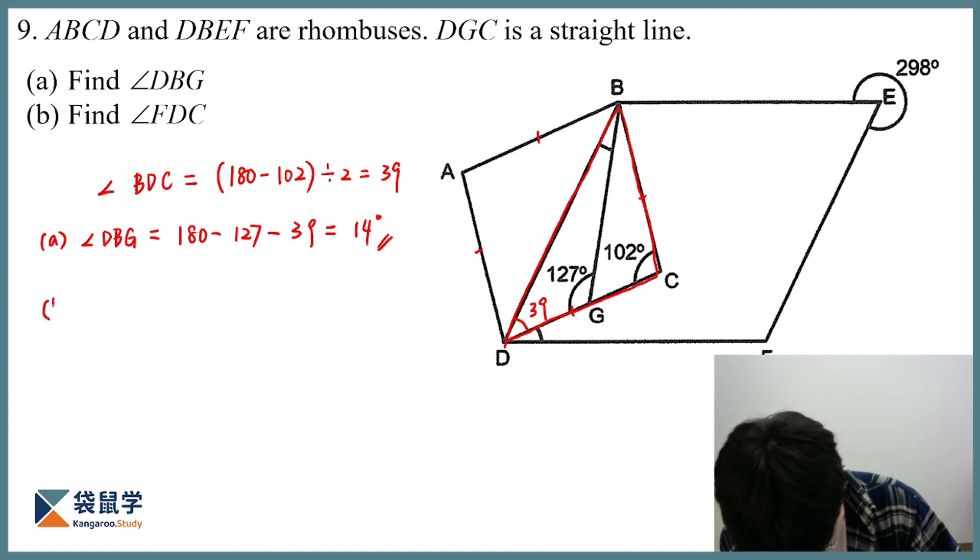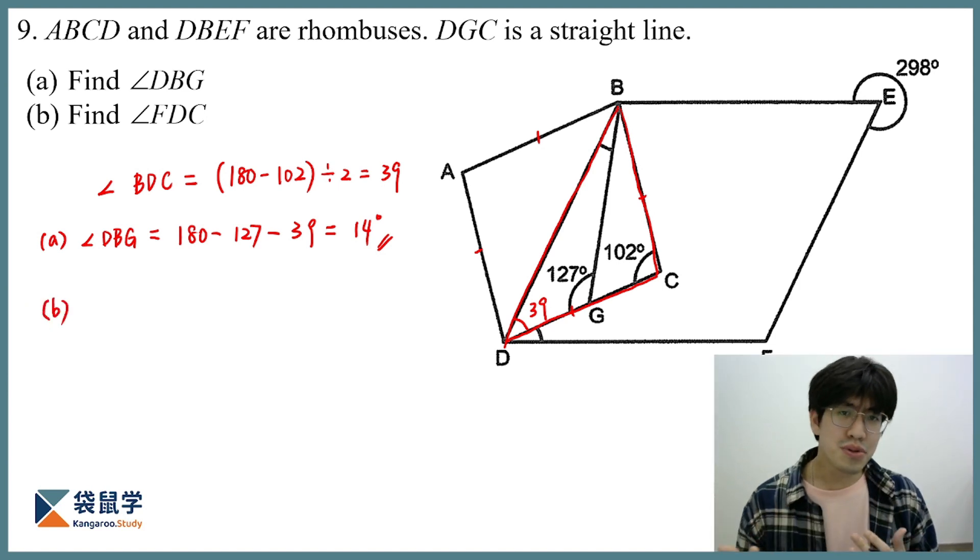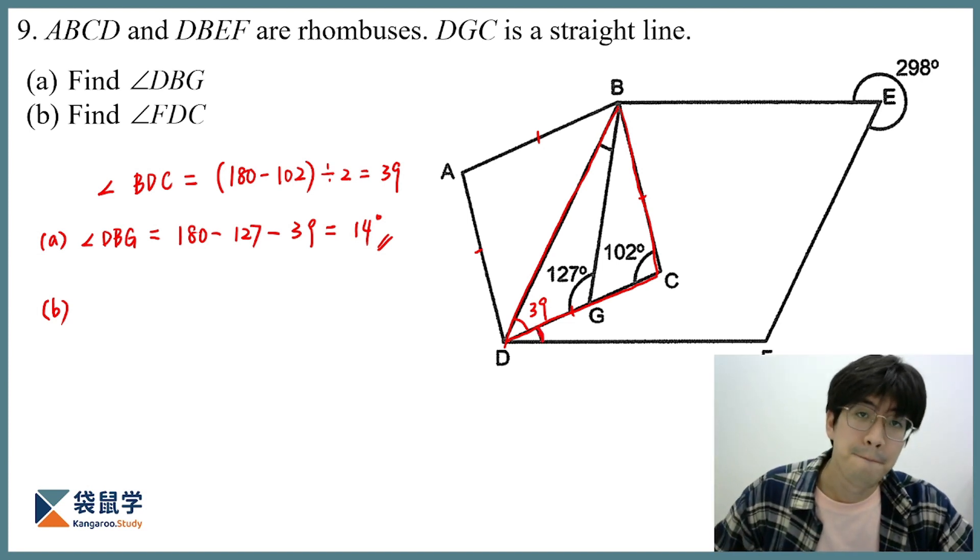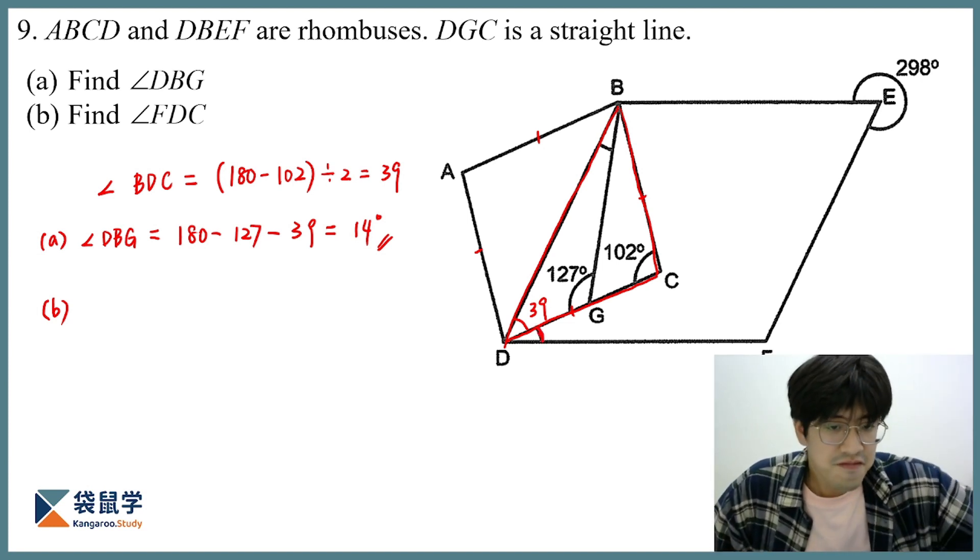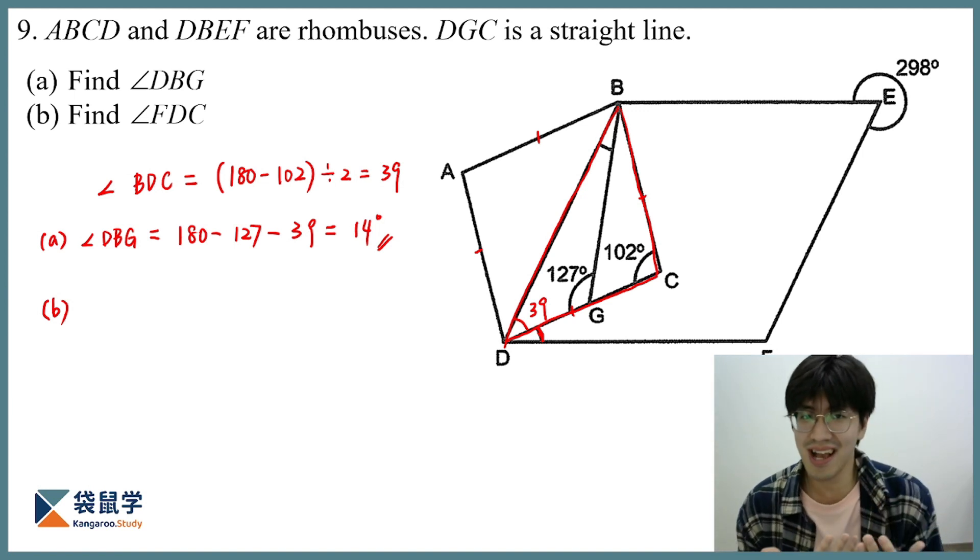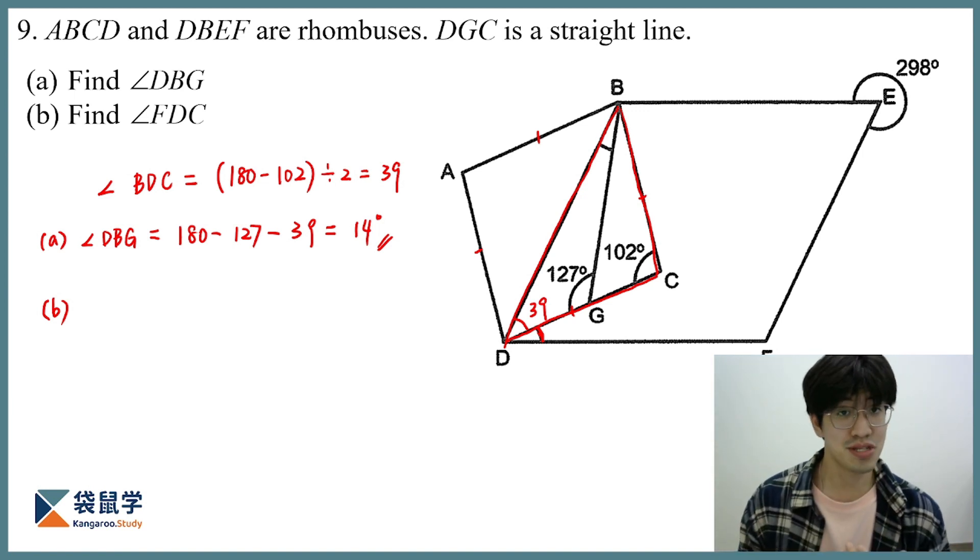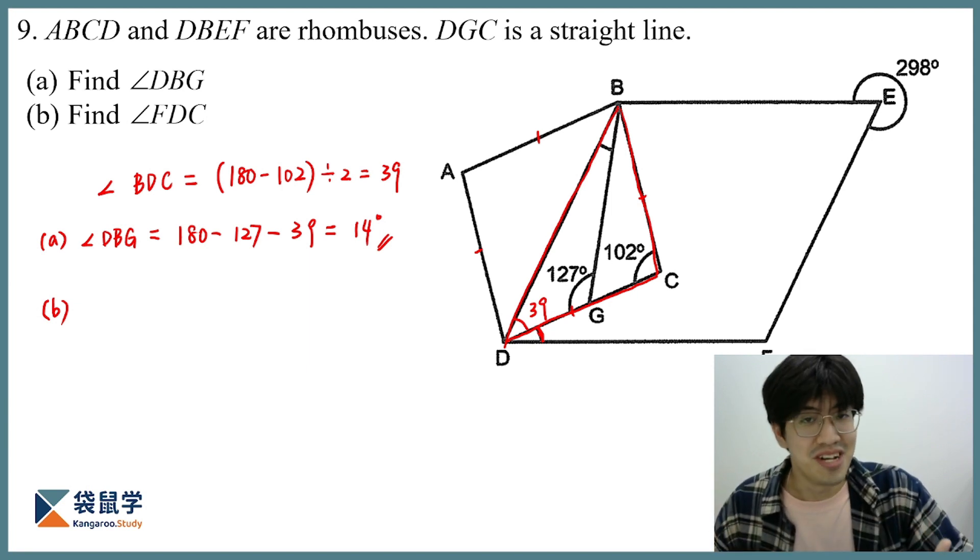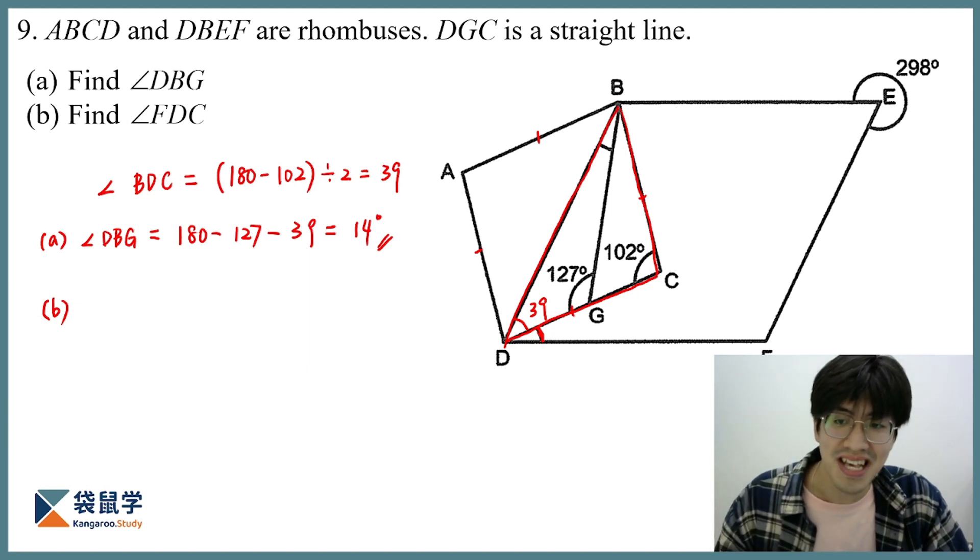How about the second part? Well, now how am I going to find out the angle FDC over here? And again, we can see the FDC is not in a triangle where I can just work out the angles in a straightforward manner. So again, what do we do? We go to look for the known information, the given information in the questions.